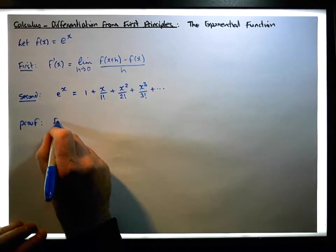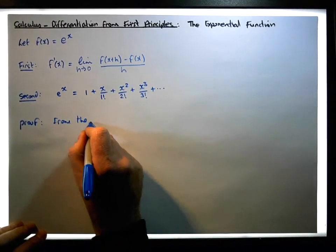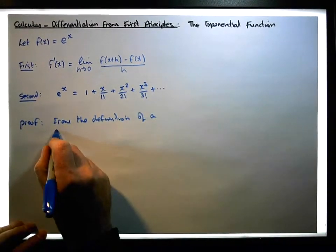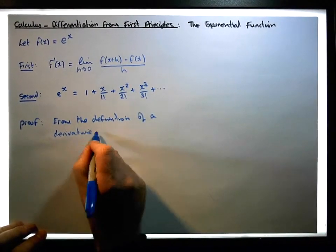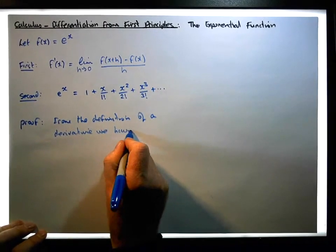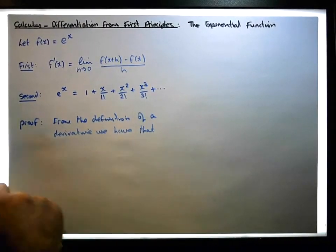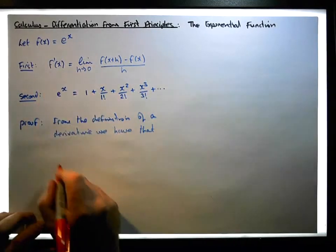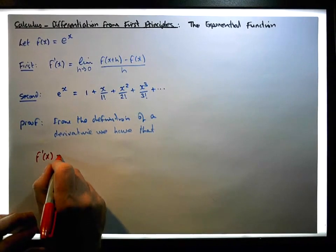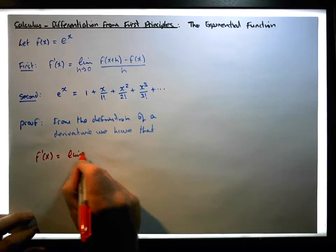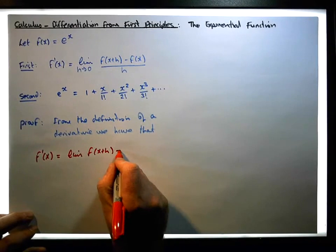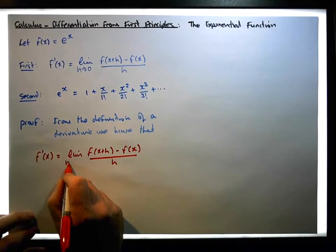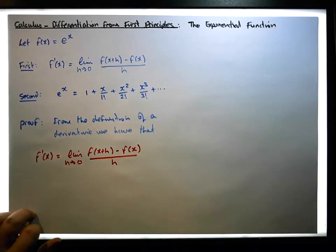From the definition of a derivative, we have that f prime of x must be equal to the limit of f of x plus h minus f of x, all divided by h, as h tends to zero.